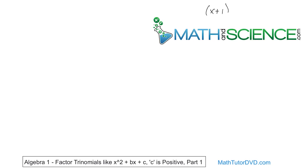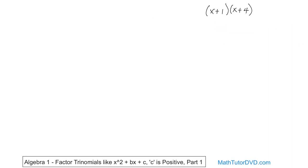If we have x plus 1 and we're multiplying it times x plus 4, how do you do that? This is multiplying two binomials together. Well, we learned about FOIL — F-O-I-L. So we do the first terms multiplied together, then the outside terms multiplied together, then the inside terms, then the last term.